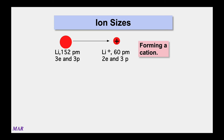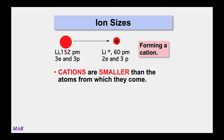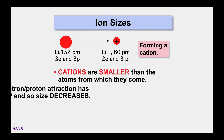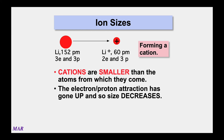This means that forming a cation — a positive ion — always results in a smaller ion than the neutral atom it came from. Protons are pulling more on the electrons, pulling them in tighter. You can see that lithium goes from 152 picometers down to 60 picometers as lithium⁺ — quite a bit smaller. The attraction has gone up: more protons pulling on the same number of electrons means size decreases.